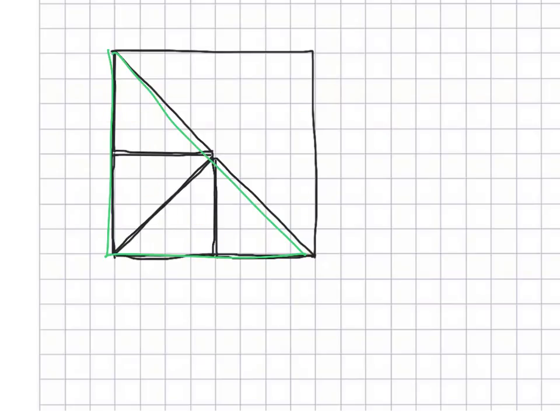So parents and teachers, that's the general idea we want our students to be grappling with: the idea that a half might look different. At one point it might look like a rectangle, and then in another case it might be a triangle — and it's the same amount. It's the same half.